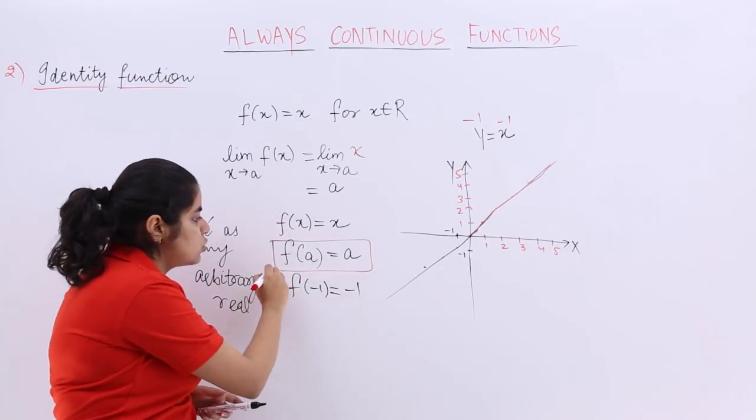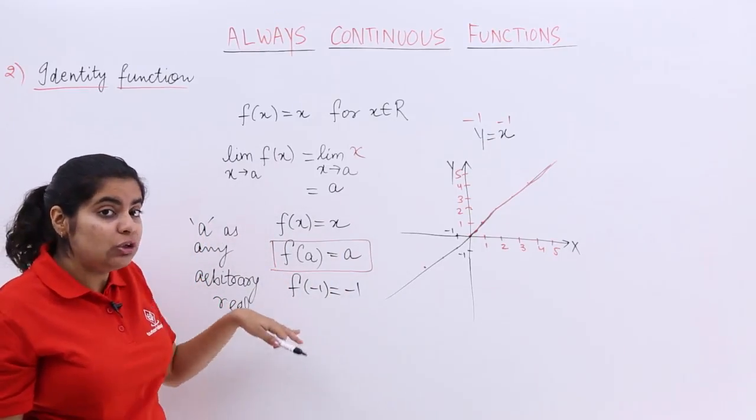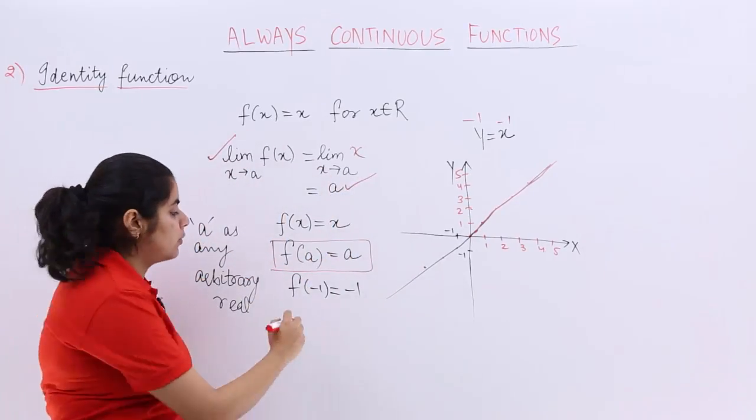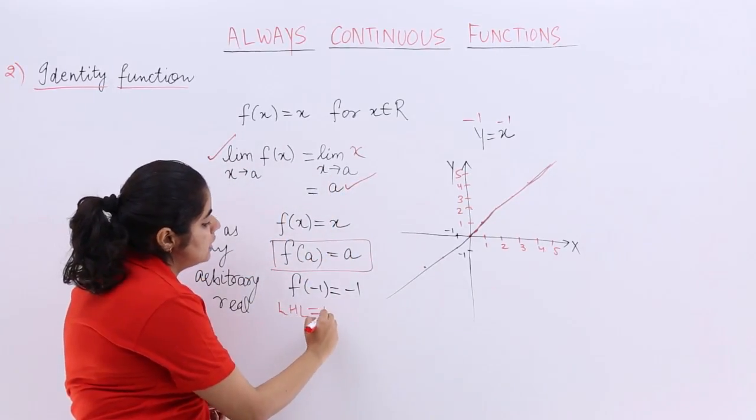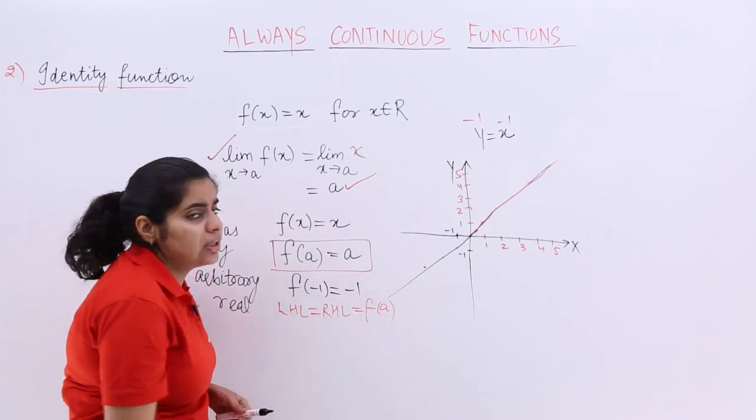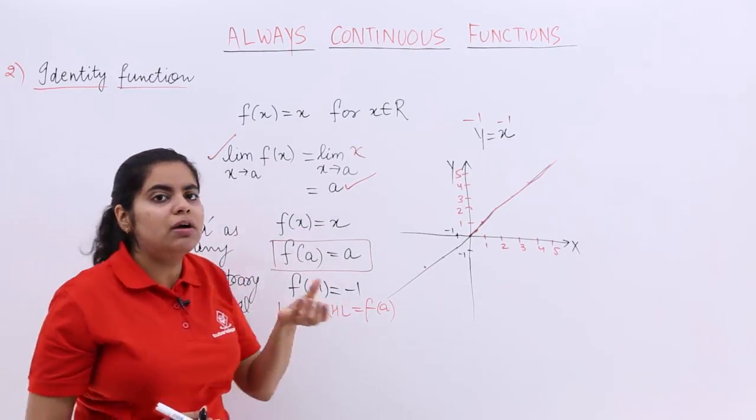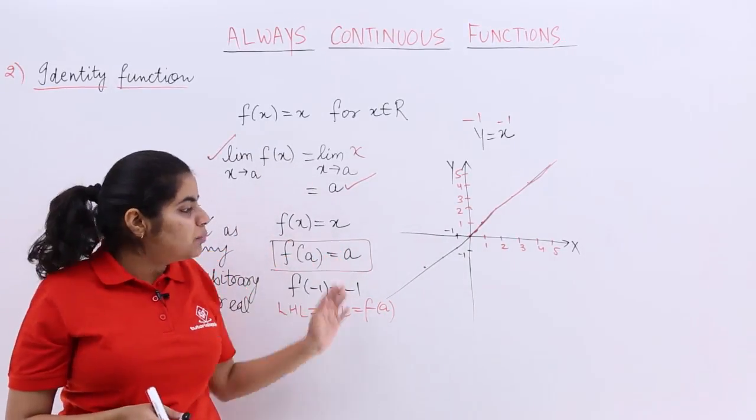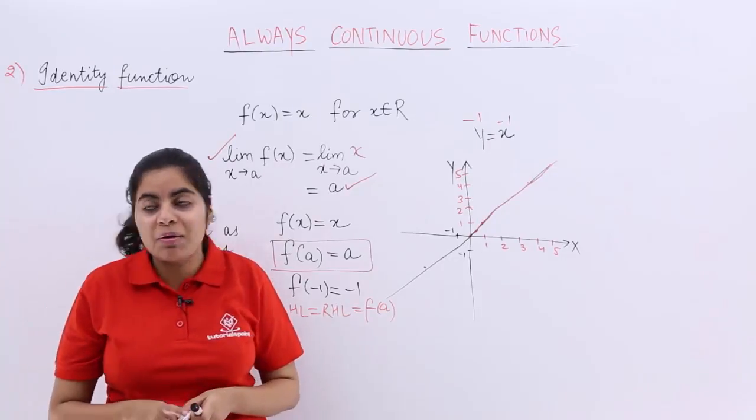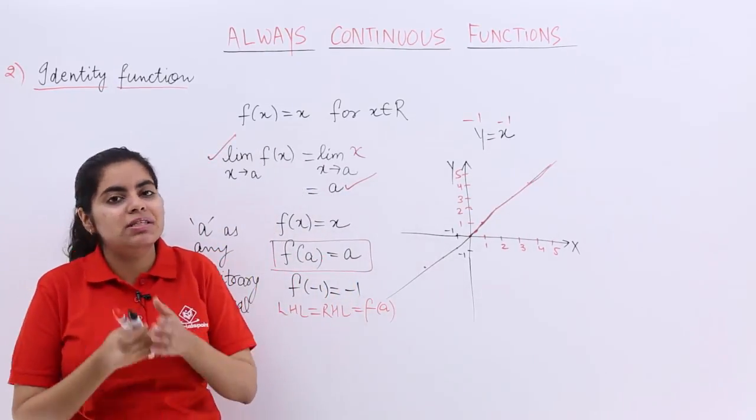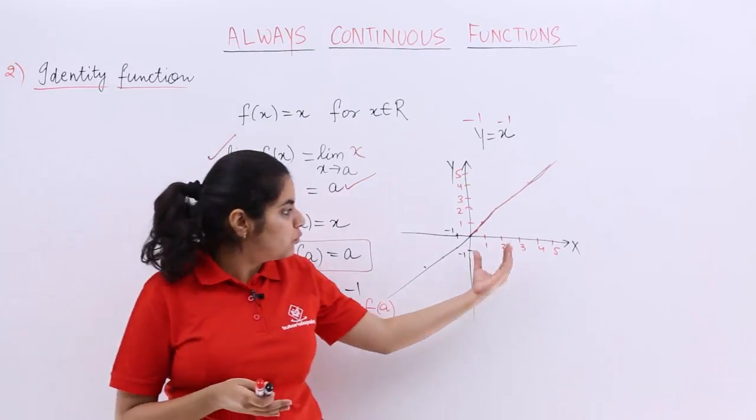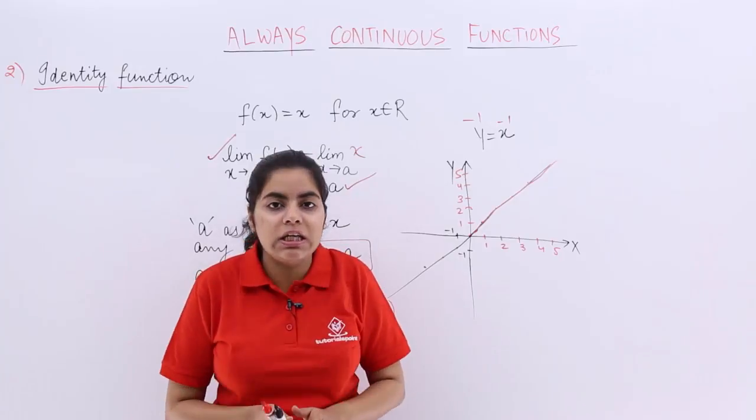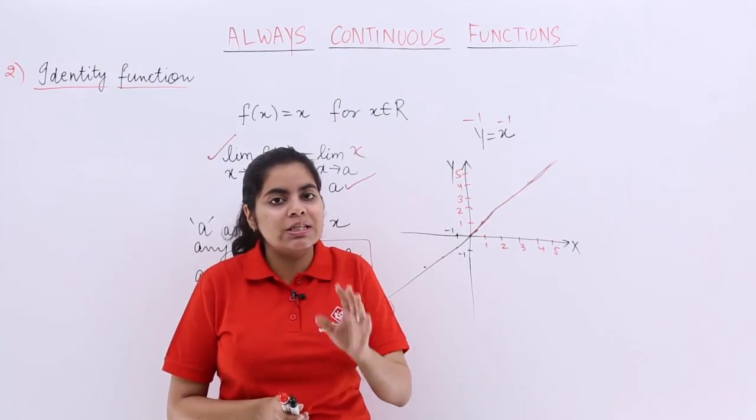So when f(a) is also a, the value of the function is a, the value of the limit is also a. That means LHL equals RHL equals the value of the function at that point, and it will always be a finite value because we are talking about real numbers. So I can prove from here also that my identity function is continuous everywhere, and I can prove from the graph also. You do not need to prove it, you just need to memorize it.